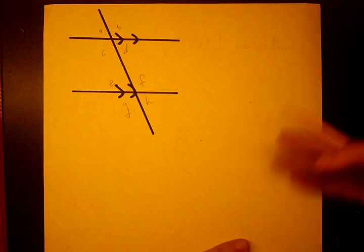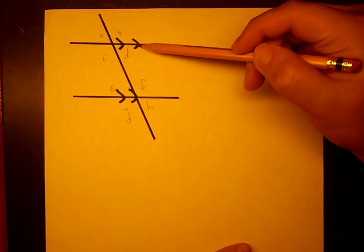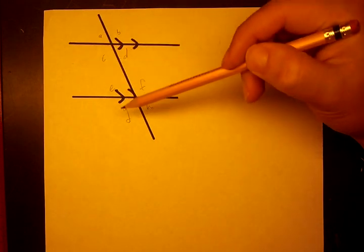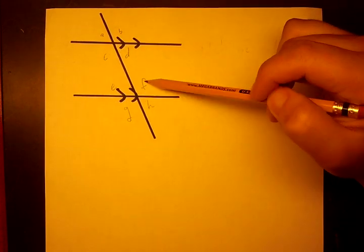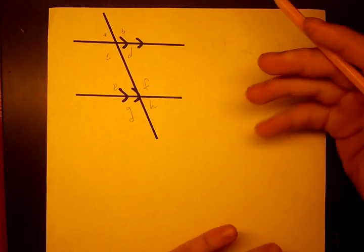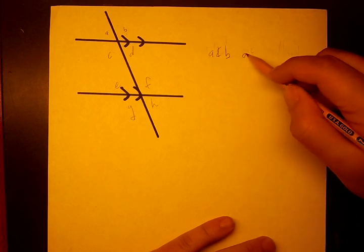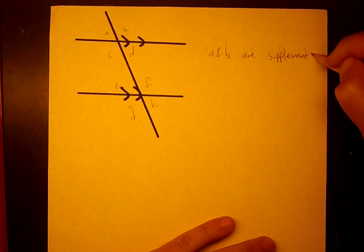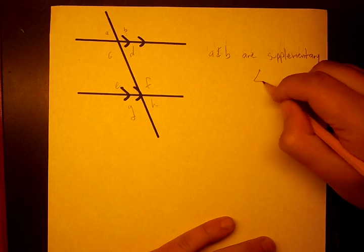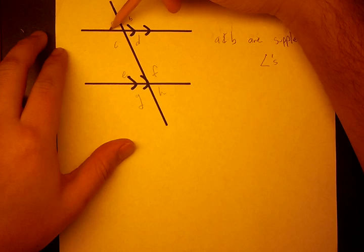So we're just going to go over definitions first. I've drawn two parallel lines and we know they're parallel because they have this symbol, the two arrows, and a transversal which is another line that intersects both. Now I've labeled all the angles A, B, C, D, E, F, G, H. Now let's go over definitions. A and B are supplementary angles. That's going to be my angle symbol because they add up to 180 degrees and because they form a line when we take them together. They form this line.